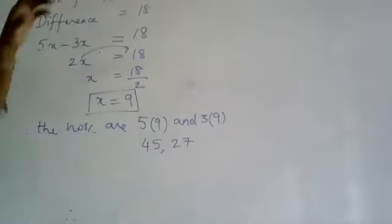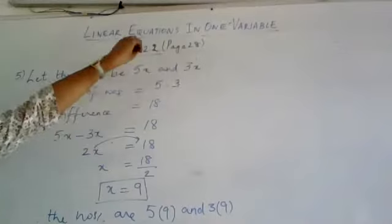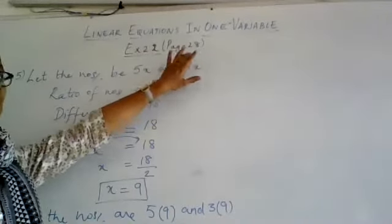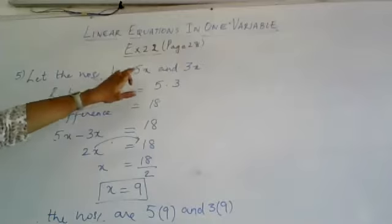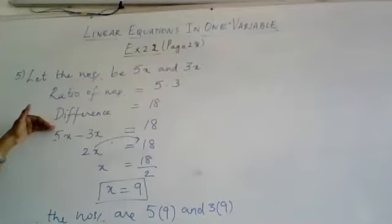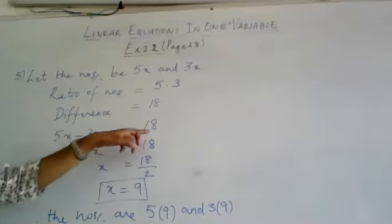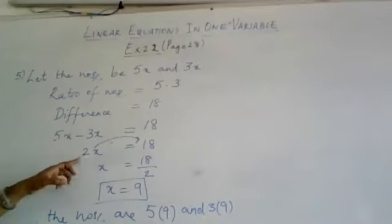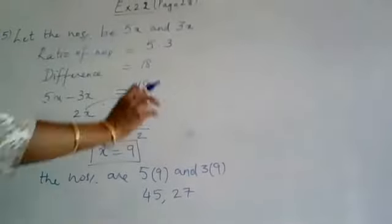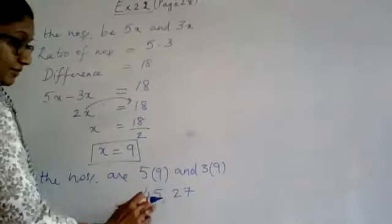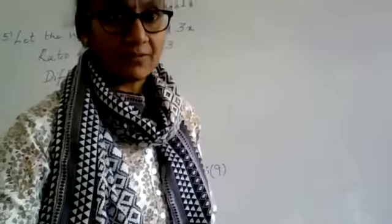Because the ratio between the two numbers is given, I assumed my numbers as 5 times x and 3 times x so their ratio remains 5 is to 3. Once I have 5x and 3x, the second condition — the difference is 18 — gives me the equation. I solve it to get x, then substitute back to find the numbers as 5 times 9 which is 45, and 3 times 9 which is 27. Therefore the numbers are 45 and 27.